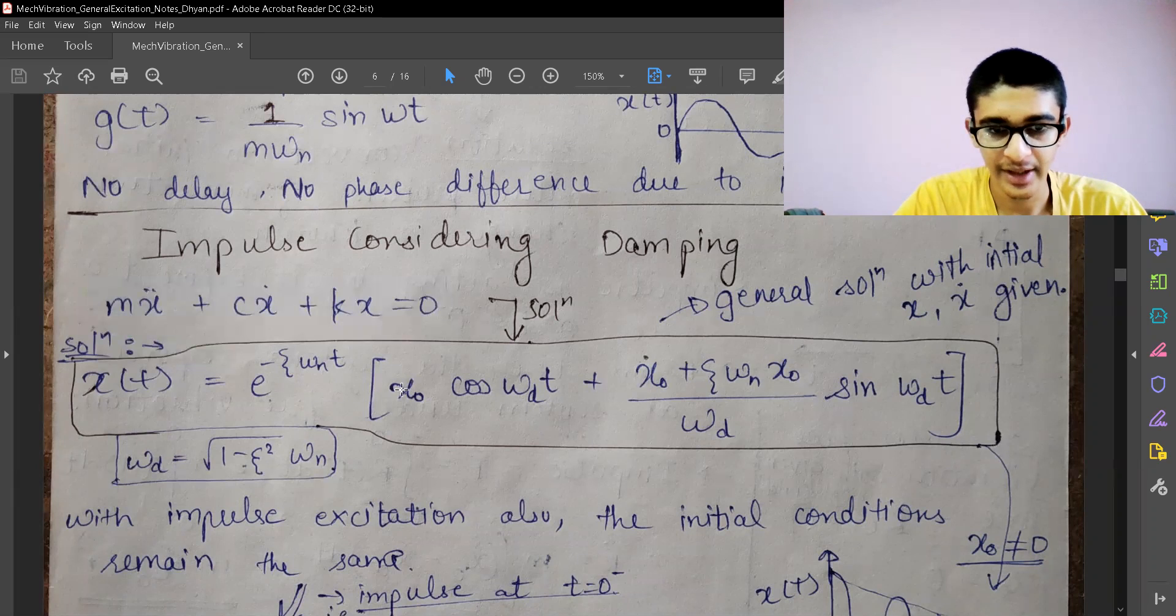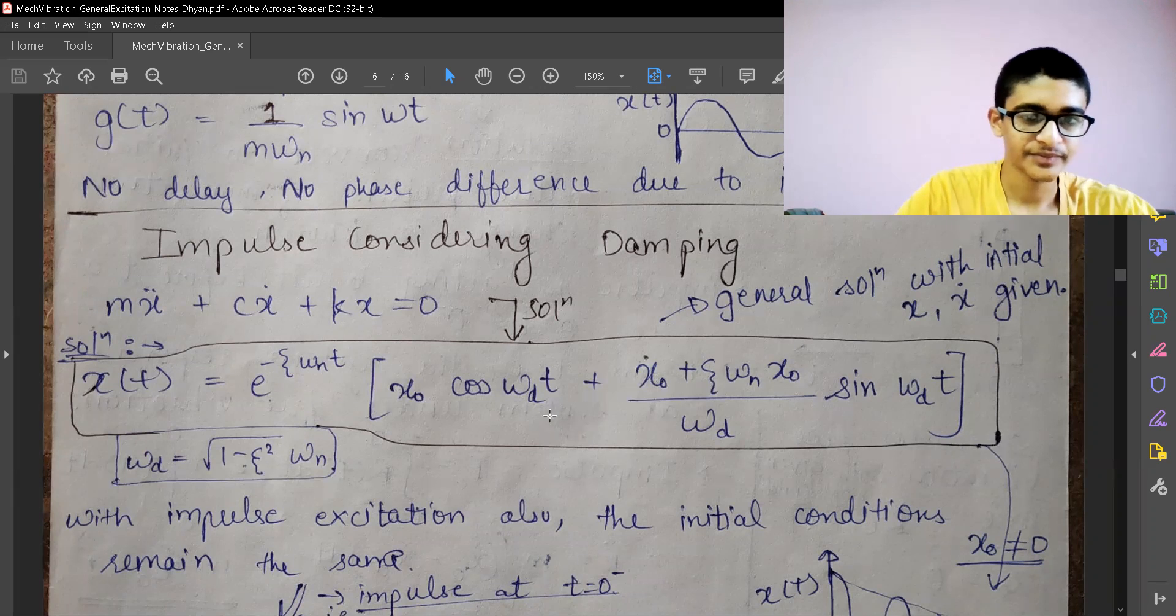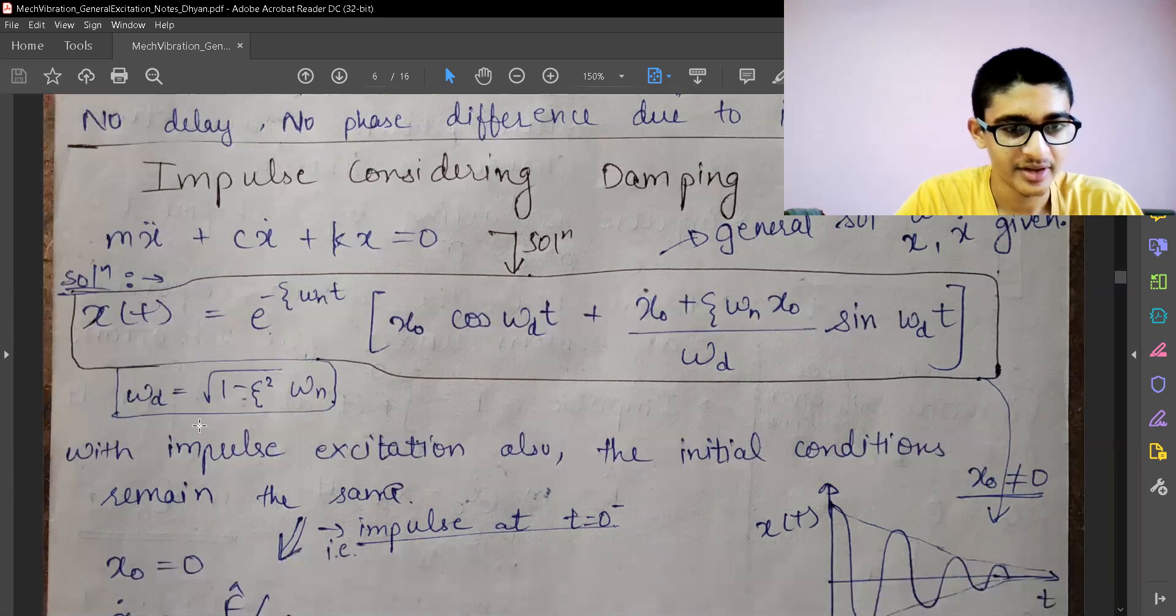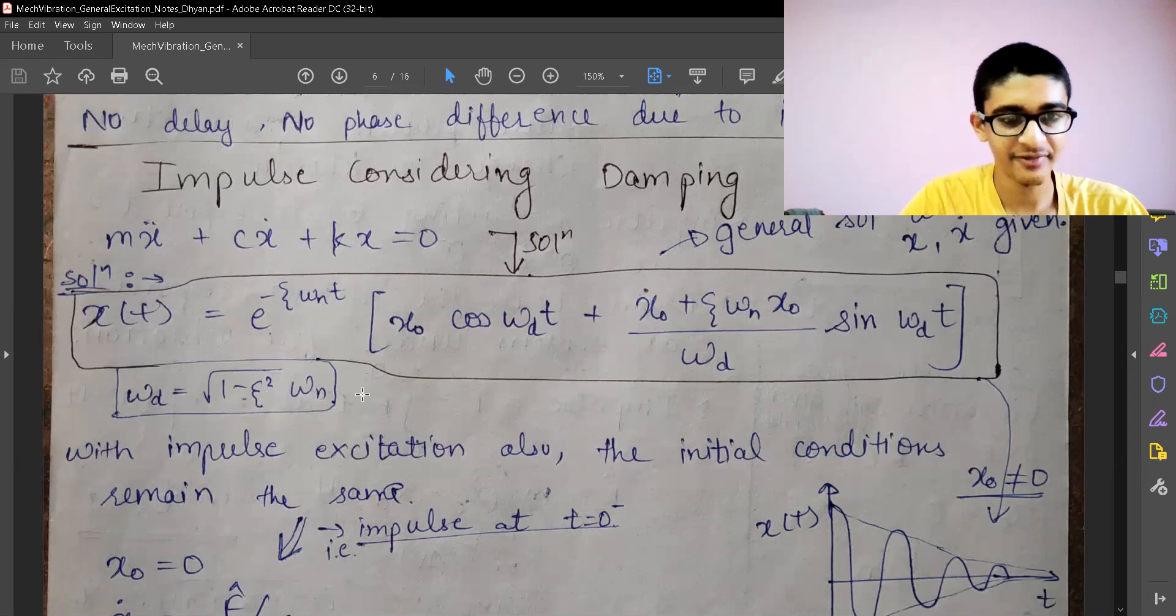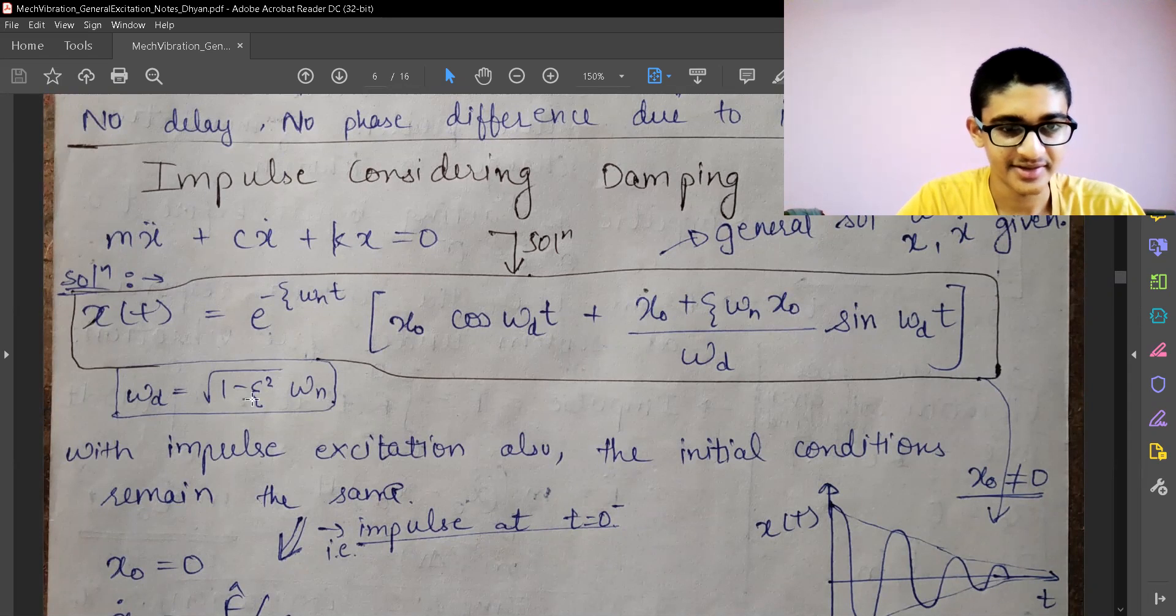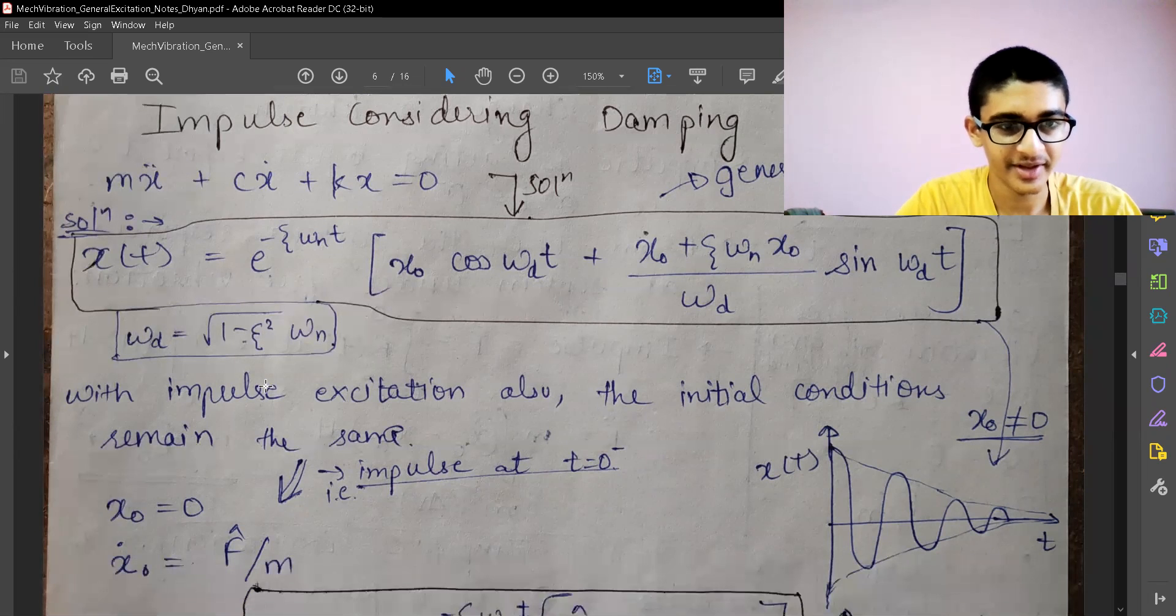This is the general solution which has x0 and x0 dot, the two initial conditions which are known to us. Omega d is the damped frequency, omega n is the natural frequency, and theta is the damping ratio, the ratio of damping coefficient to critical damping value.